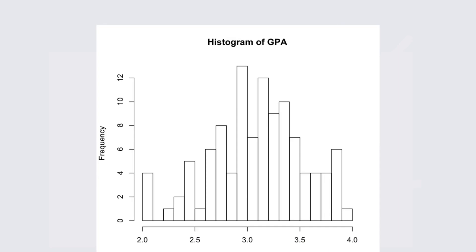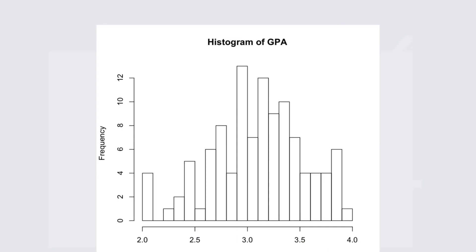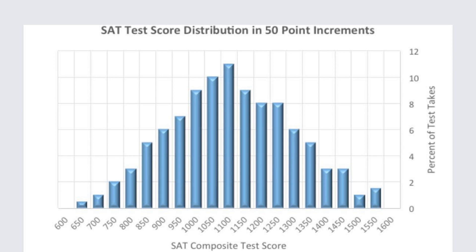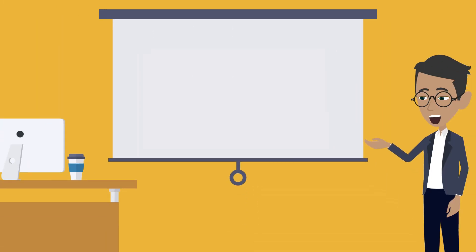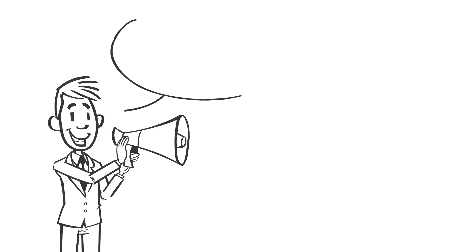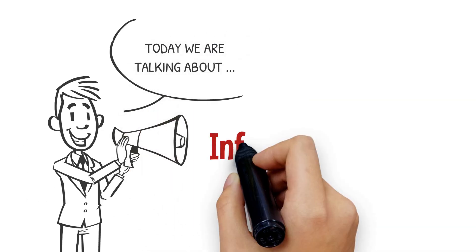we can describe finance majors in terms of average high school GPA or average SAT scores. But if we want to know whether the average GPA for finance majors is different than, say, history majors, we will need to use inferential statistics.